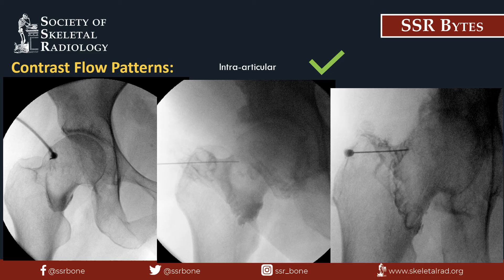Here are some additional examples of intra-articular contrast. The image on the left uses an eye of the needle approach with contrast along the lower aspect of the femoral neck. The middle and right-sided images use an oblique approach with contrast also along the inferior aspect of the femoral neck. The intra-articular contrast in the middle and right images appears less smooth in contour and slightly irregular compared with the left-sided image. This can be seen in the setting of synovitis of the hip joint and is a frequently encountered finding.